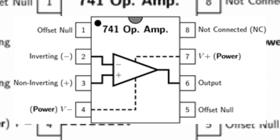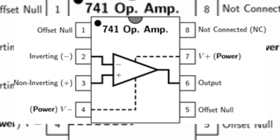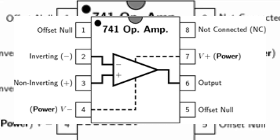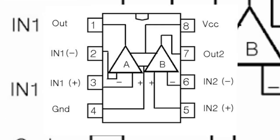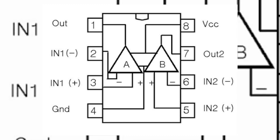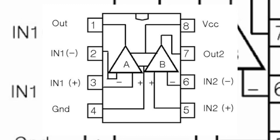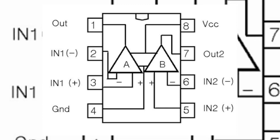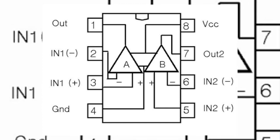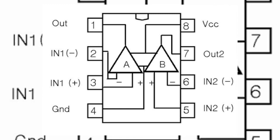It will be one operation amplifier — you can see the power supply in this diagram. The next operation amplifier is the 4558. This is a dual op-amp — there are two operation amplifiers.